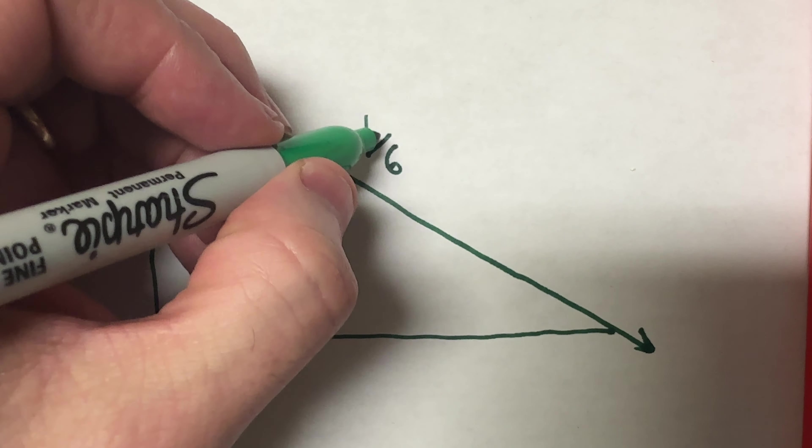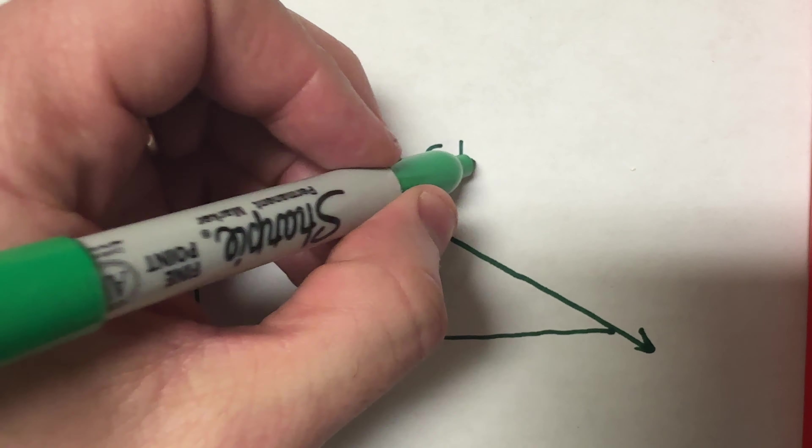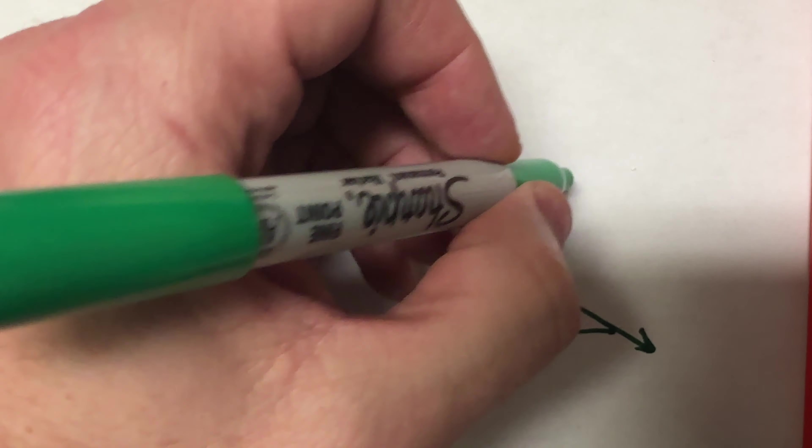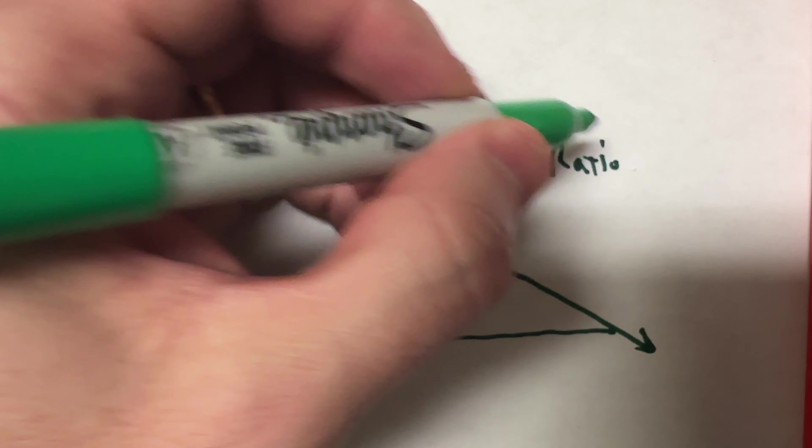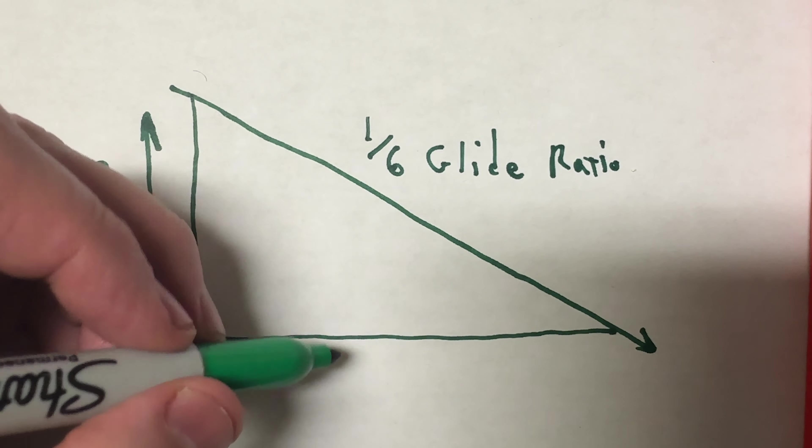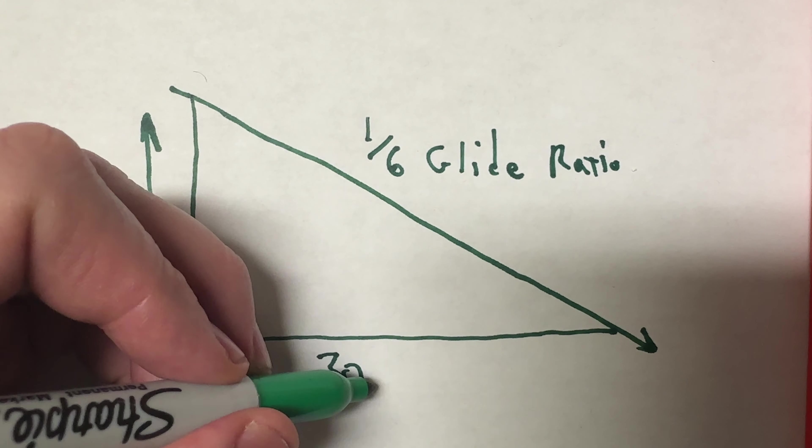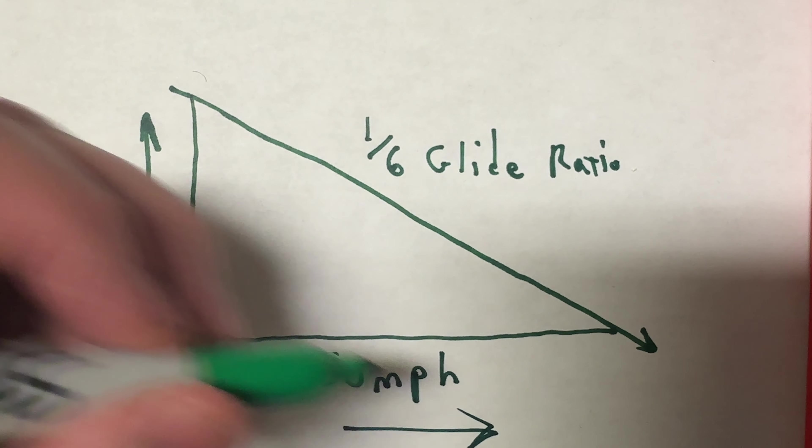let's see a 1 to 6 glide ratio, right, is what I assume that glide ratio is what I assume I'm going to probably have. And then if I'm going forward at like 30 miles per hour, that way,